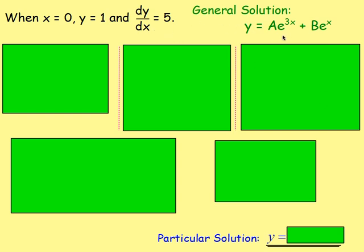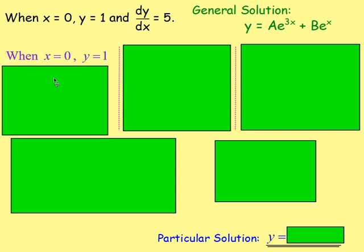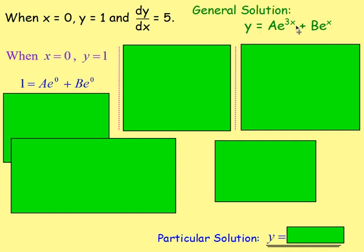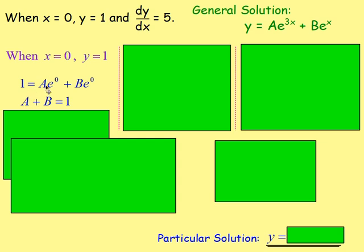That means we can find out the values of a and b. The first thing we're told is that when x is 0, y is 1. If you take the general solution, replace x with 0 and y with 1, then we have 1 equals ae^(0) plus be^(0). Anything to the power of 0 is 1, meaning we have a + b = 1.